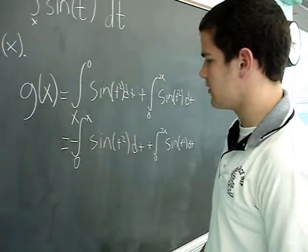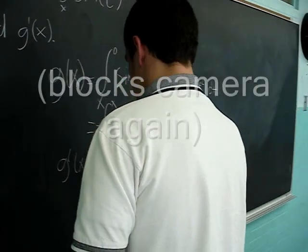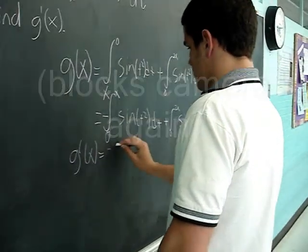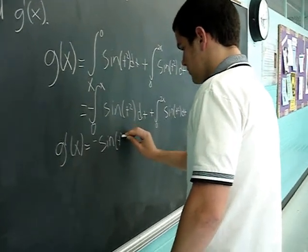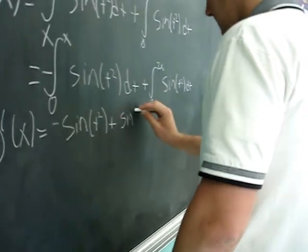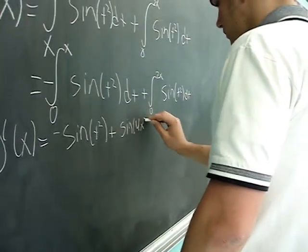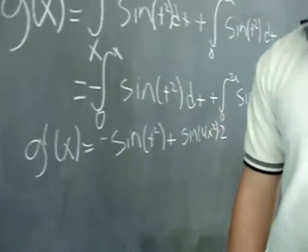Now you simply evaluate the integrals as you did before. So g prime of x equals negative sine of x squared times 1 plus sine of 2x squared times 2.